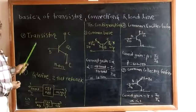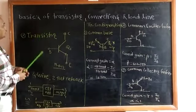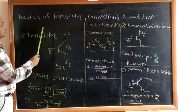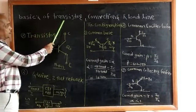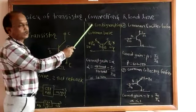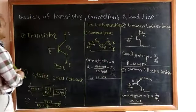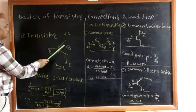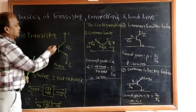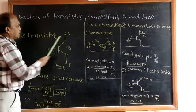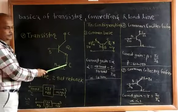Welcome to all SR students. Today we are going to study some basic features of transistor connections and its load line. Basically, a transistor is a three-terminal device — collector, base, and emitter.